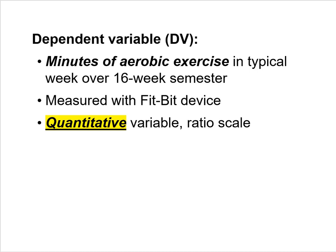In our investigation, the dependent variable, abbreviated DV, is minutes of aerobic exercise the participant engages in during a typical week over the course of the 16-week semester, measured with a Fitbit device. This dependent variable is a quantitative variable measured on a ratio scale. We want our outcome variable on an interval or ratio scale because we'll be computing means for each condition.